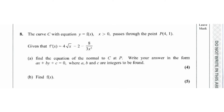Question number a: if you look at question number a, the function y equals f of x and the first derivative f'(x) is given. The first derivative of the function is given and you need to find the equation of the normal at the point P(4, 1). This part a is worth 4 marks.